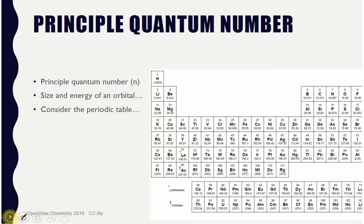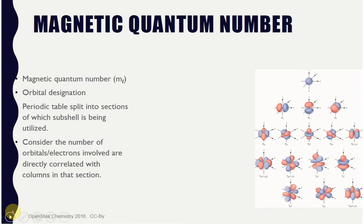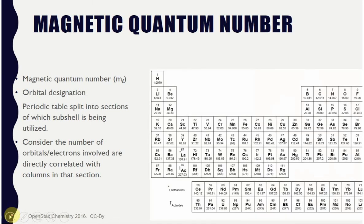To summarize the quantum number hierarchy: you start with the principal quantum number (energy level), narrow to the angular momentum quantum number (sublevel), then the magnetic quantum number (specific orbital), and finally the spin quantum number (m sub s) to specify exactly which electron we're referring to.